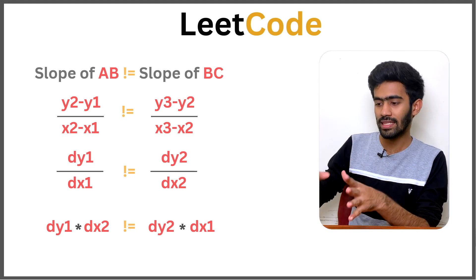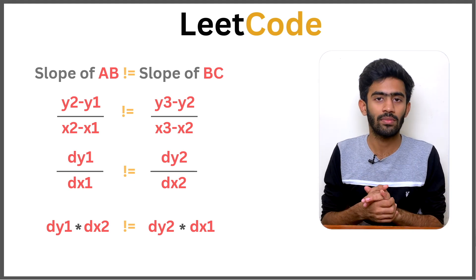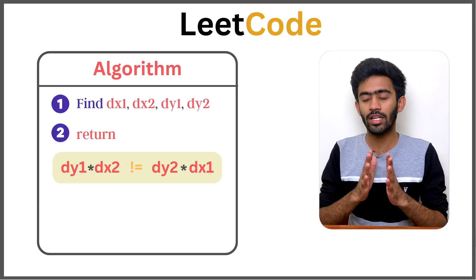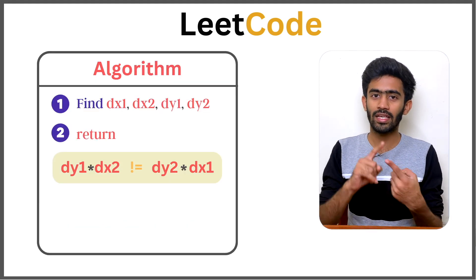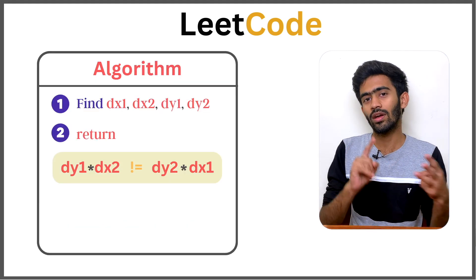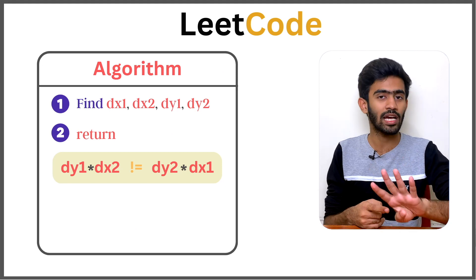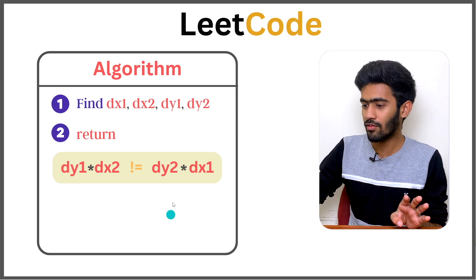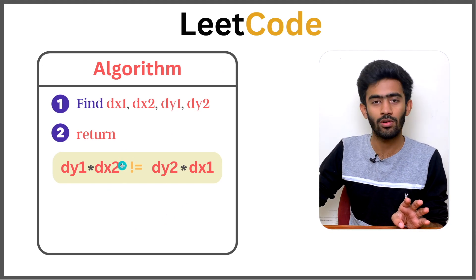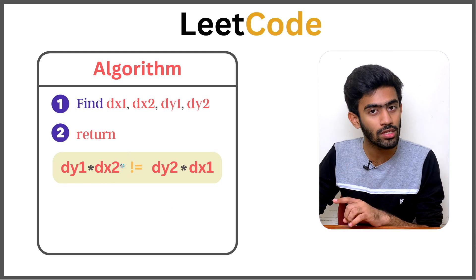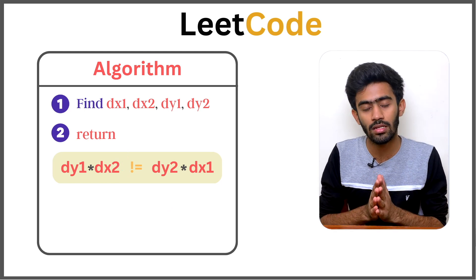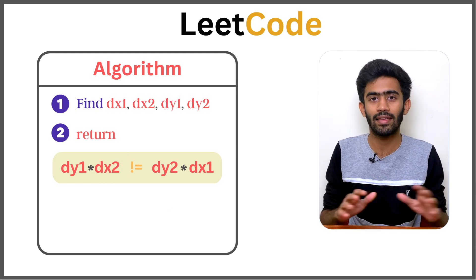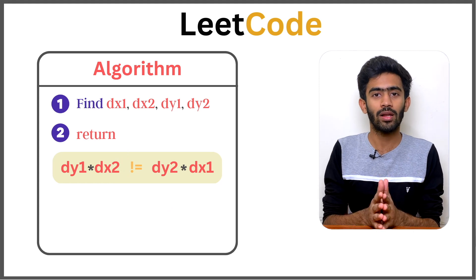Now we apply this formula — it is very simple. We compute four values: dx1, dx2, dy1, dy2. Then we apply the condition. If it is true, the answer is true. If it is false, the answer is false. As simple as that.